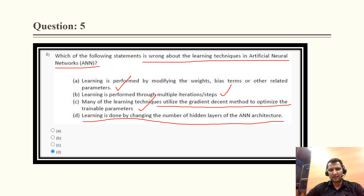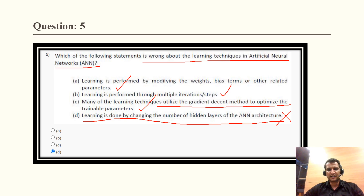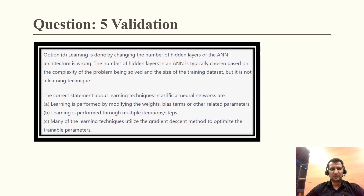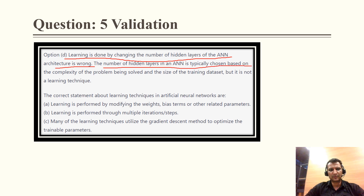The wrong statement is option D: learning is done by changing the number of hidden layers in the ANN architecture. This is wrong because the number of hidden layers depends on the complexity of the problem — if complexity is very high, more hidden layers are used. Its relation to learning is not valid. The remaining three statements are correct.